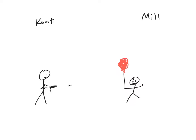So Kant wants to know: what are the motives behind the action? Why is the man shooting the gun? And Mill wants to know: what happens next? What are the consequences of the action?